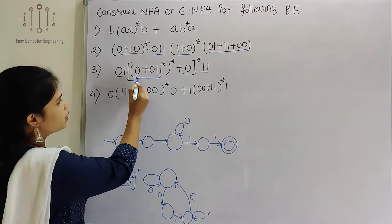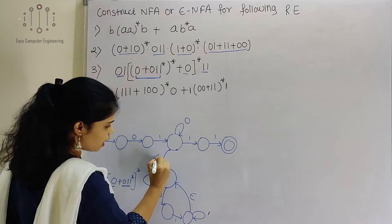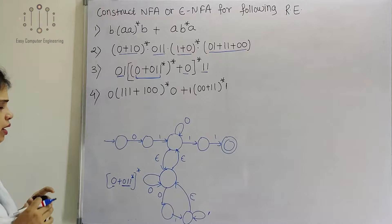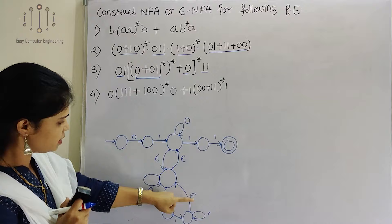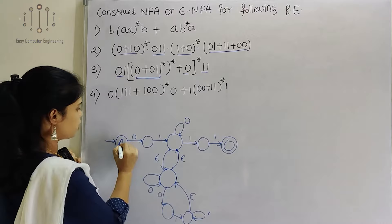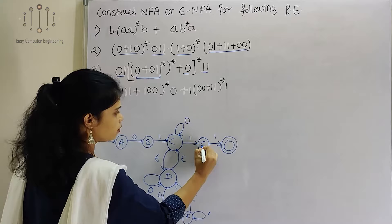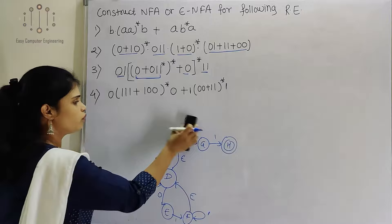Now we have to take OR with epsilon and 0. So we take an epsilon transition from this state. This will be our final epsilon-NFA: 0, 1, then this 0, and this part is the inner expression. Then it ends with 1,1. State H will be our final state.